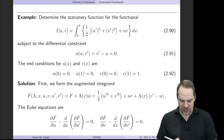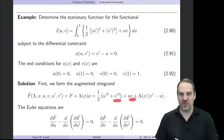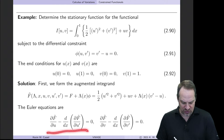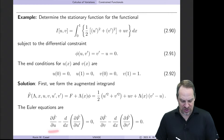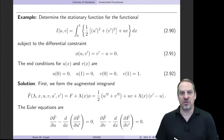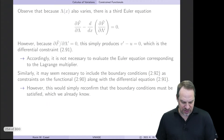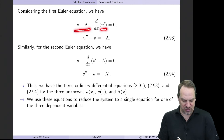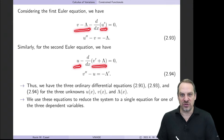Looking at our integrand, we have u's and u primes as well as v's and v primes. We write down the Euler equations for that situation in the usual form but now for f tilde. We evaluate partial f tilde partial u, partial f tilde partial u prime, partial f tilde partial v, and partial f tilde partial v prime.